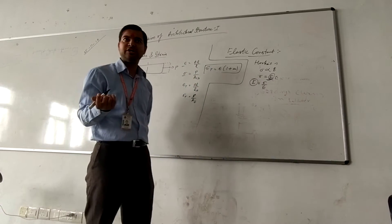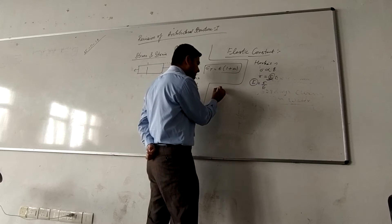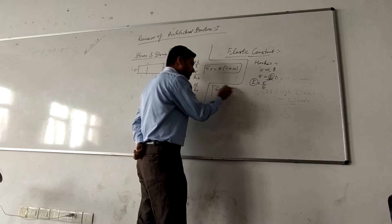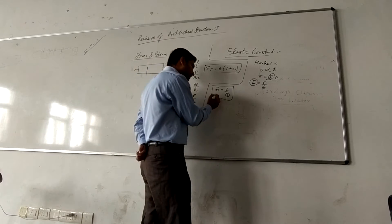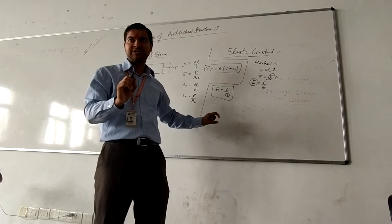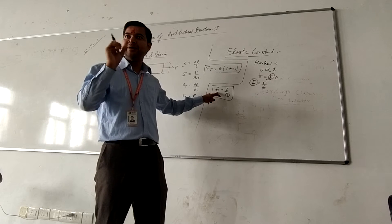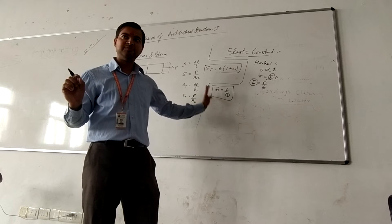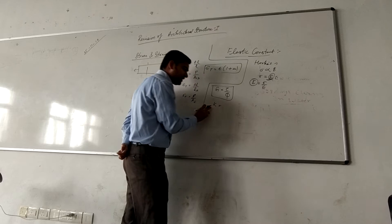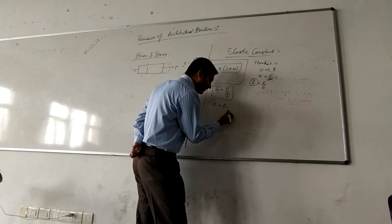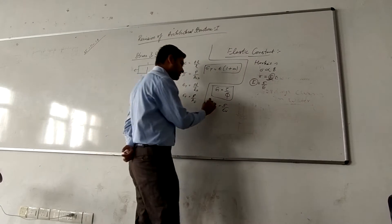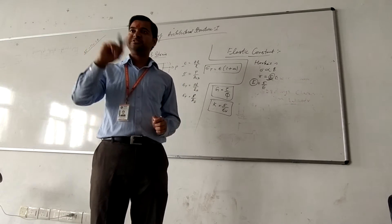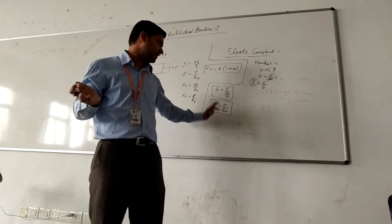One more constant is modulus of rigidity, denoted by G, which equals shear stress divided by shear strain. What does modulus of rigidity mean? If the material has minimum strain it will have maximum rigidity, meaning the material is rigid — that is why we call it modulus of rigidity, defined as shear stress divided by shear strain. Another constant is bulk modulus, defined as normal stress divided by volumetric strain.